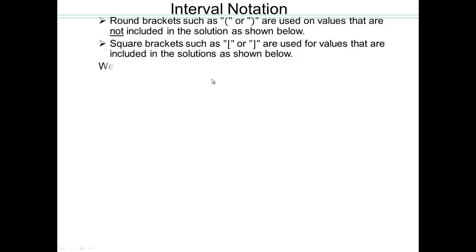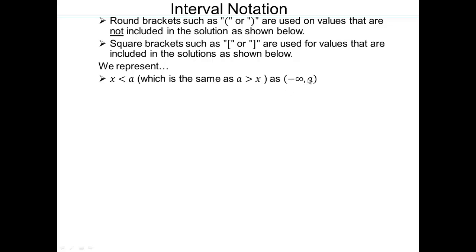Once we do examples, it will become more clear. So we represent, for example, x is smaller than a, where a is a real number — it's the same as saying a is bigger than x, written as open bracket negative infinity to a, open bracket. As soon as you have a positive or negative infinity, infinity means keep going forever. Negative infinity means keep going forever on the negative side, and positive infinity means keep going in the positive direction forever. Let's plot it on a number line so you can see what this interval notation represents.